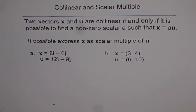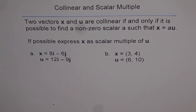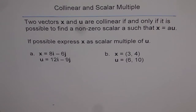Collinear and scalar multiple. Let's try to understand how these terms are related. Two vectors x and u are collinear if and only if it is possible to find a non-zero scalar a such that x is equal to a times u.